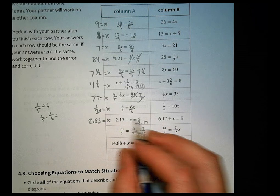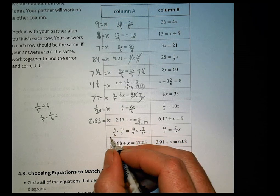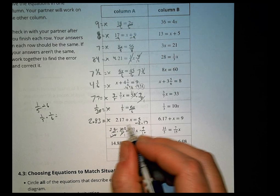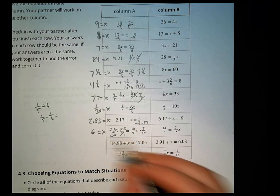This guy will multiply by 9 tenths on both sides. Reduce that to 1 and 2, reduce that to 1 and 3. 3 times 2 is 6. So 6 equals x.